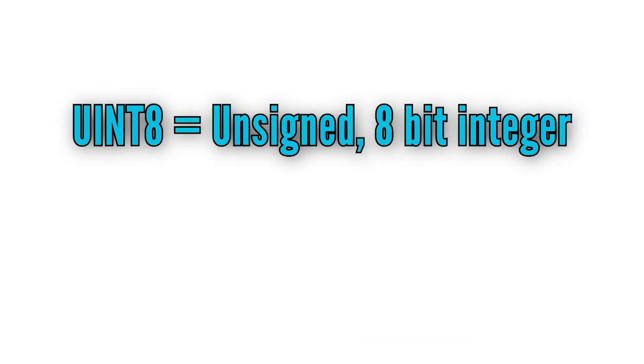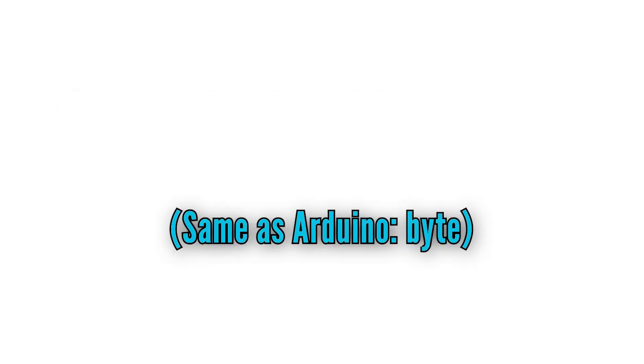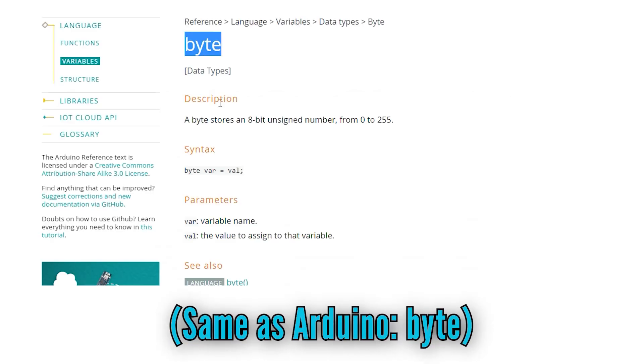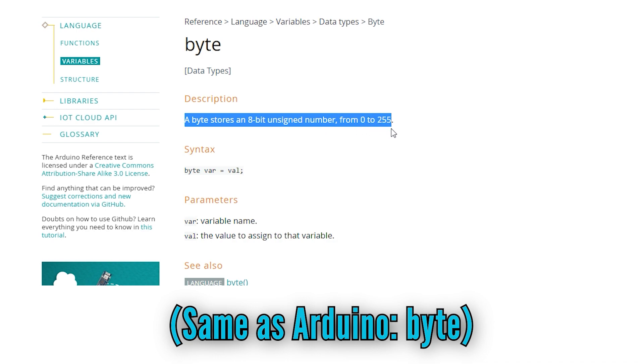Uint8 and Uint16 are more and more commonly being used because you can tell the definition of the data type just from the label, without the ambiguity you get between different languages. Uint8, for example, stands for unsigned 8-bit integer, which tells you all about what kind of values you can store in that data type.